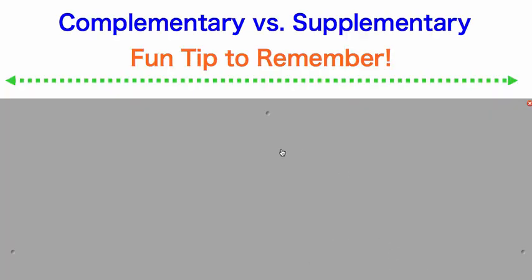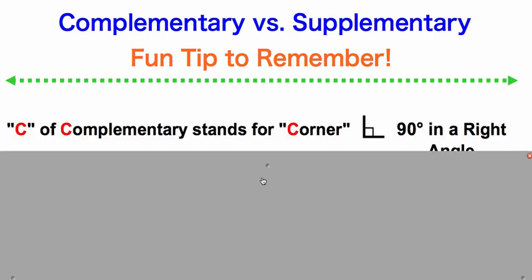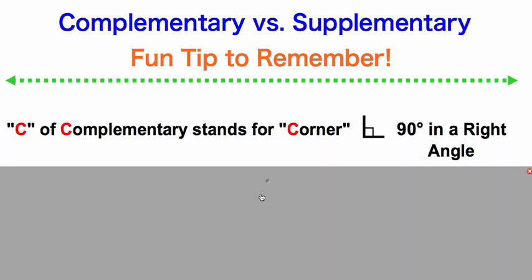Here is a fun tip to remember the difference between complementary and supplementary. Complementary, we can think C, the first letter of complementary, is a C. The C of complementary stands for corner. So we have C, C, C, complementary corner.